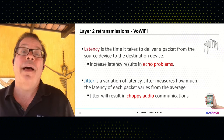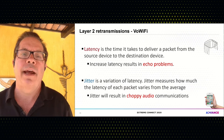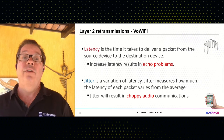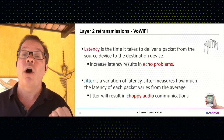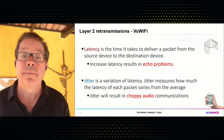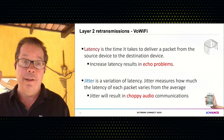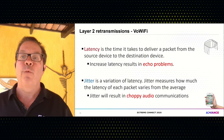Other effects of high layer two retransmissions: it has a huge impact on voice and other time-sensitive applications. Latency is the time it takes to deliver a packet from source to destination. Layer two retries — by sending frames over and over — will increase latency and cause echo problems with voice. Layer two retries also affect jitter, which is a variation of latency. Jitter measures how much the latency of each packet varies from the average, and jitter will cause choppy audio problems — gaps in the audio. Another side effect is that high layer two retry rates will drain the battery life of your mobile devices.